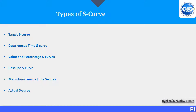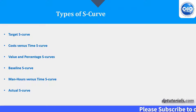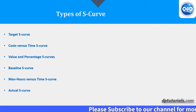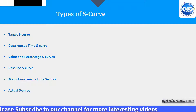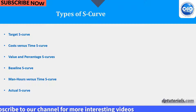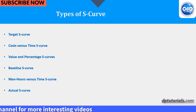Types of S-curve: Target S-curve, Cost vs. Time S-curve, Value and Percentage S-curves, Baseline S-curve, Man Hours vs. Time S-curve, and Actual S-curve.